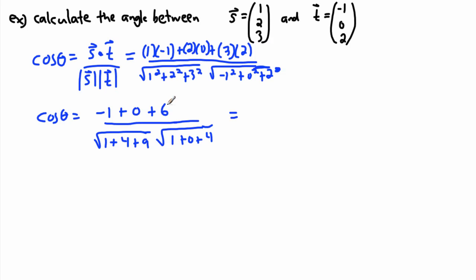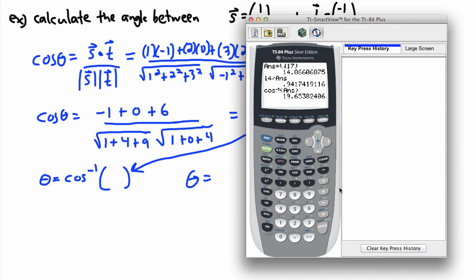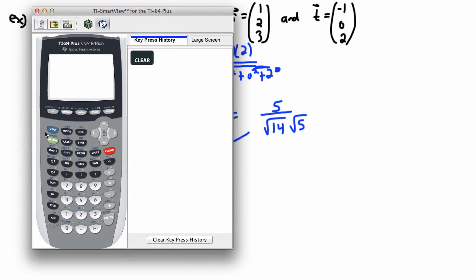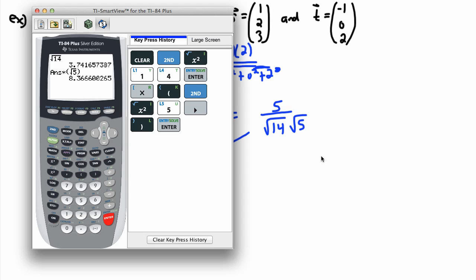Negative 1 plus 0 plus 6 — that's 6 minus 1, so that's 5. Then 1 squared is 1, 2 squared is 4, and 3 squared is 9, so the denominator has square root of 14. And negative 1 squared is 1, 0 squared is 0, 2 squared is 4, giving square root of 5. So I've got 5 over square root of 14 times square root of 5. Sometimes these work out nicely but this time we'll use a calculator.